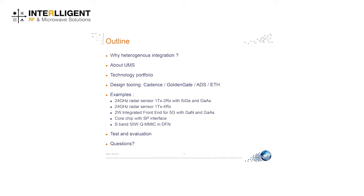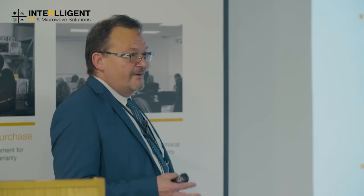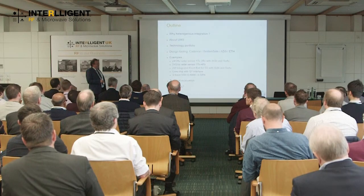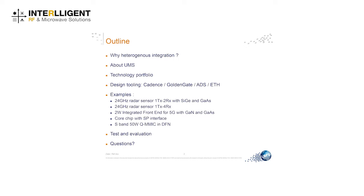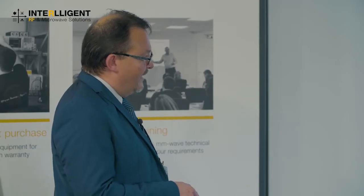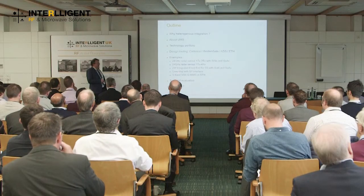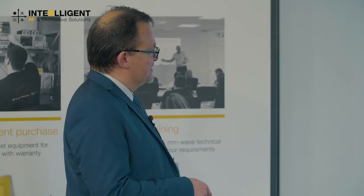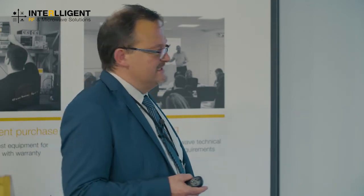I will give many examples — in the 24 GHz radar sensors where we use both SiGe and GaAs, 24 GHz radar where we use already existing products to make new products. I will also use examples related to the GaN process — introducing a 0.15 micrometer GaN process which is used in a two-watt integrated front-end where we combine gallium arsenide with gallium nitride.